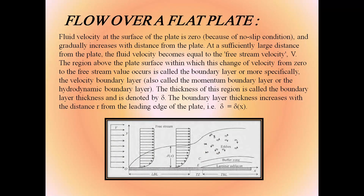For flow over a flat plate in forced convection: fluid velocity at the plate surface is zero due to the no-slip condition and gradually increases with distance until it equals the free stream velocity V. The region where velocity changes from zero to the free stream value is the velocity (momentum/hydrodynamic) boundary layer, with thickness δ increasing with distance from the leading edge. The boundary layer regions include buffer zone, laminar zone, transition region, and turbulent region.